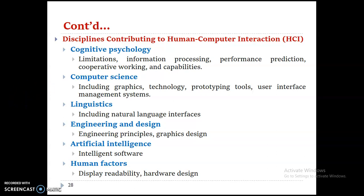The second discipline is computer science, including graphics, technology, prototyping, tooling, and computer interface management systems. Any computer science expert can develop graphics, technology, simulations, prototypes, and computer interfaces. To design or improve human-computer interaction, any developer or expert must understand the concepts of computer science.